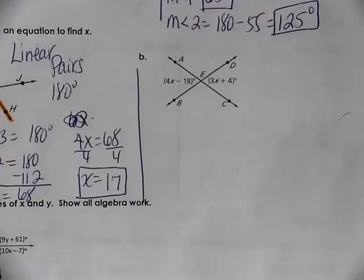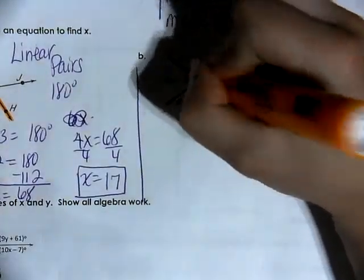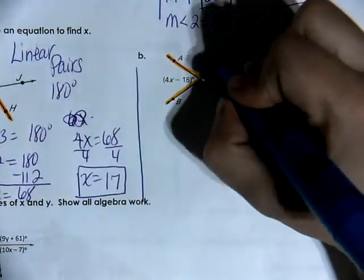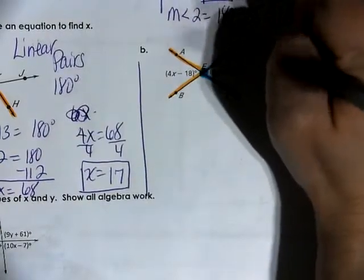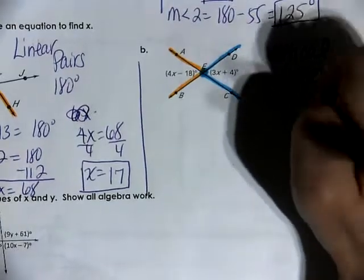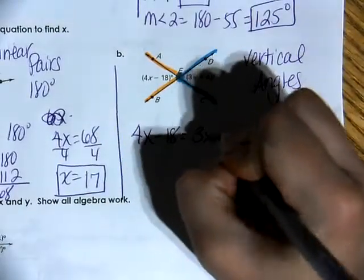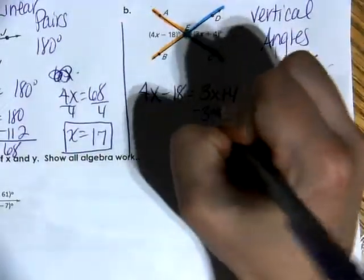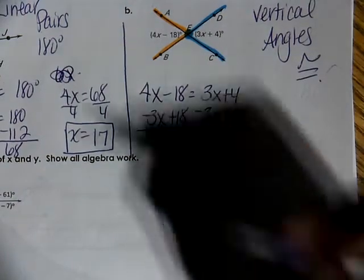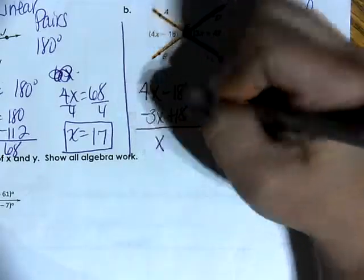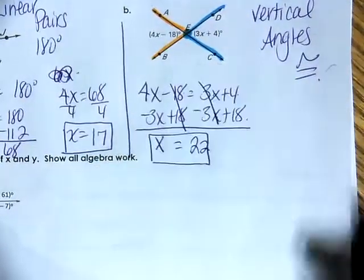Let's look at letter B. Looking at the relationship of these two angles, they are vertical angles because the only thing these two angles have in common is they share a common endpoint, and they are formed where two lines are intersecting each other. We know that vertical angles are congruent, and if they are congruent, they are equal in measure. So I set 4x minus 18 equal to 3x plus 4. I subtract 3x on both sides and add 18 on both sides. So 4x minus 3x is x, negative 18 plus 18 goes away, and 4 plus 18 is 22. Therefore x equals 22.